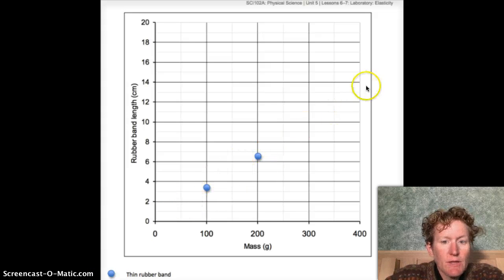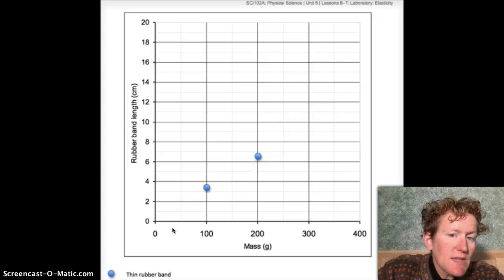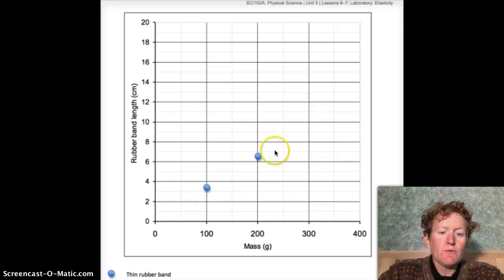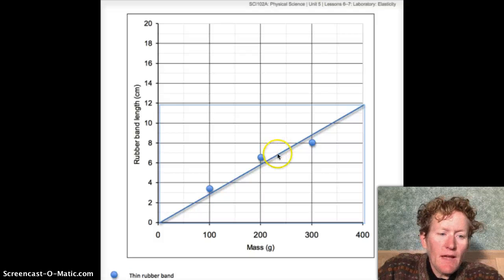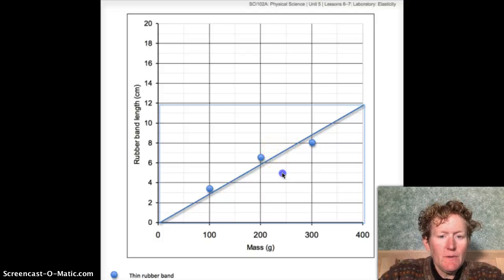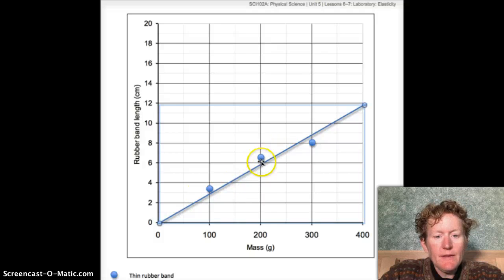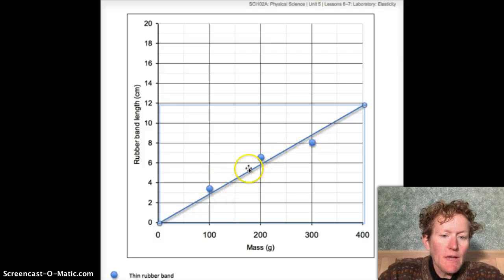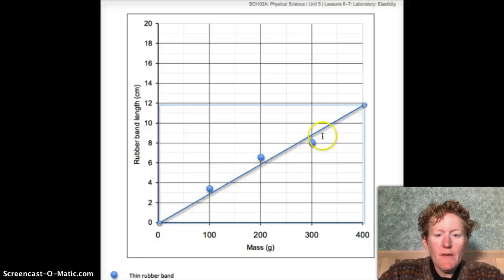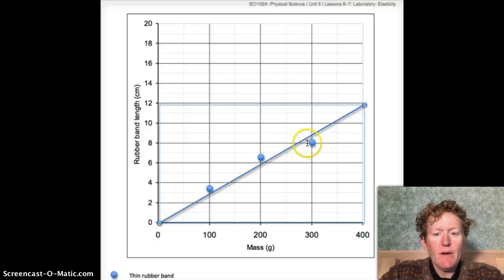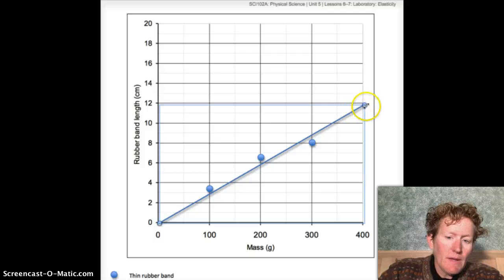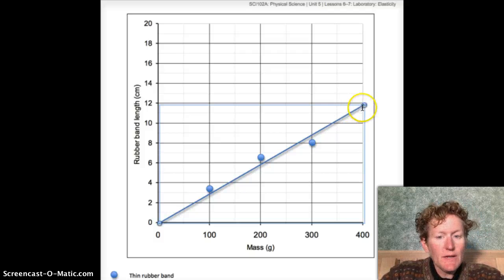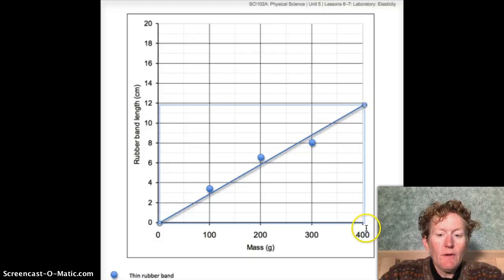I've put on two blue points for the thin rubber band. When I'm done here, I'll draw a trend line. Please use the line tool to draw a line. I've taken a line tool from the shapes menu and drawn a trend line that doesn't touch all of the points, but some are above and some are below. Try to have as many points above as below. Make sure your trend line goes all the way to the axis because you're going to predict what would happen if we put 400 grams on this rubber band.